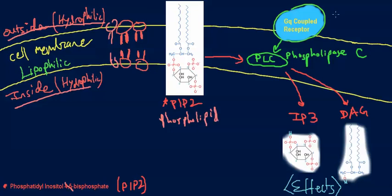Lithium acts on the Gq-coupled receptor indirectly. When something activates the Gq receptor, it activates downstream pathways and ultimately activates PLC — phospholipase C. PLC cleaves phospholipids, specifically PIP2, and cleaves it right at a specific point to form two products: IP3 and DAG.